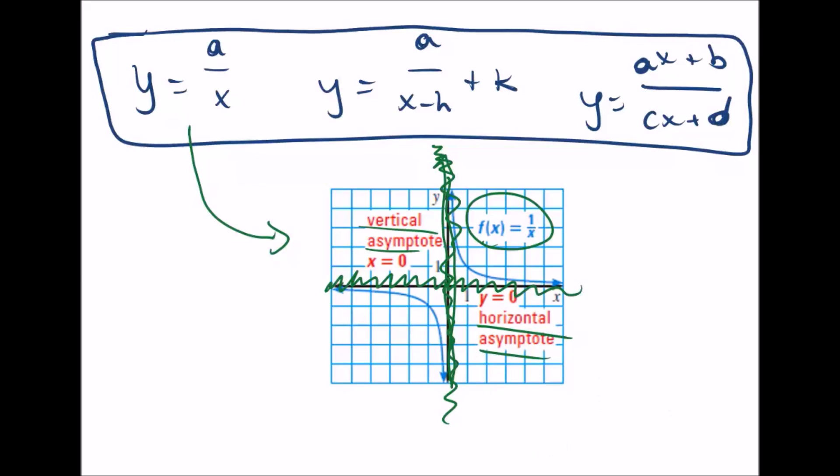What's most important for you at this point is to know that in the most basic form, y equals one over x, the most basic simple rational function, there's a vertical asymptote at x equals zero.